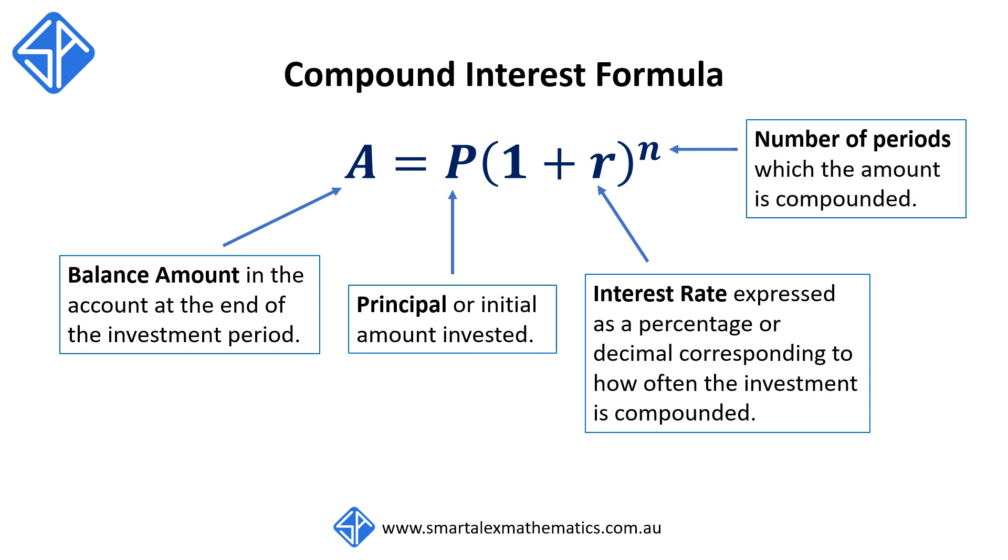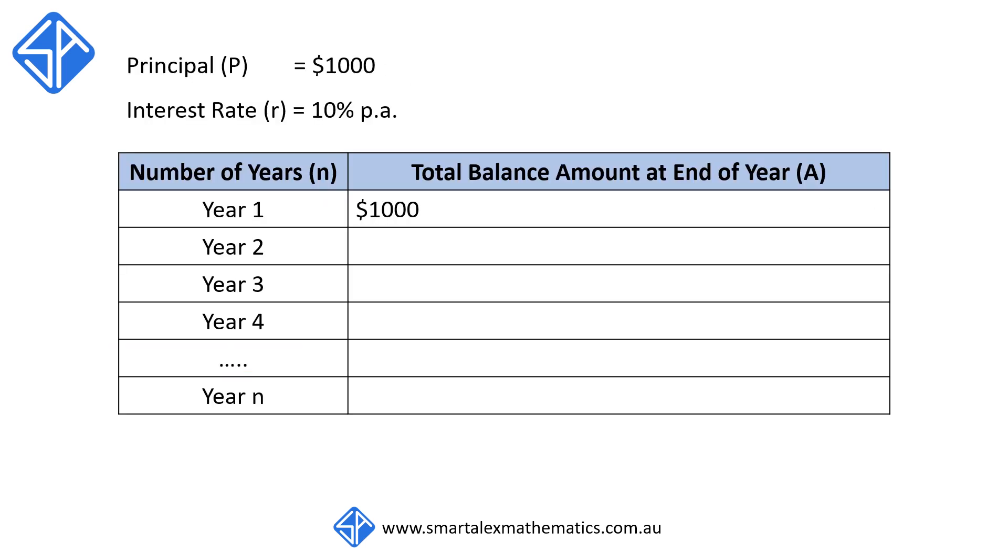And N is the number of periods which the amount is compounded. So let's consider what happens when we invest a principal P of $1,000 at an interest rate of 10% per annum compounded yearly.